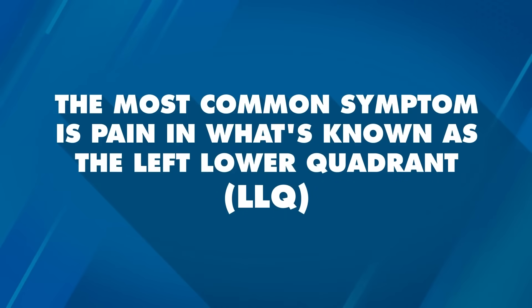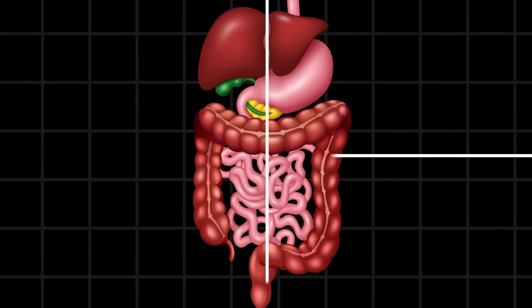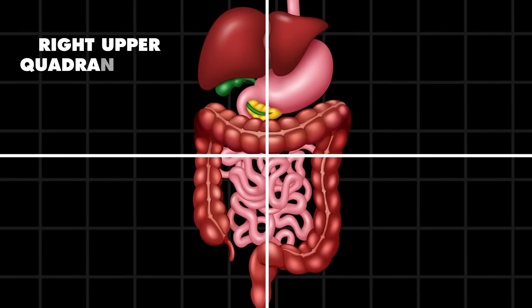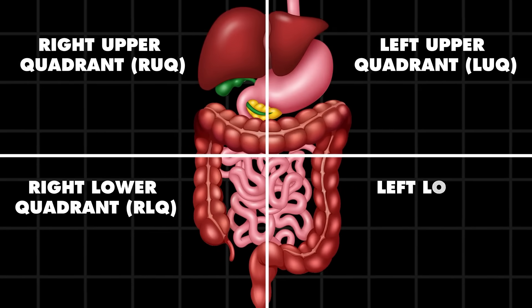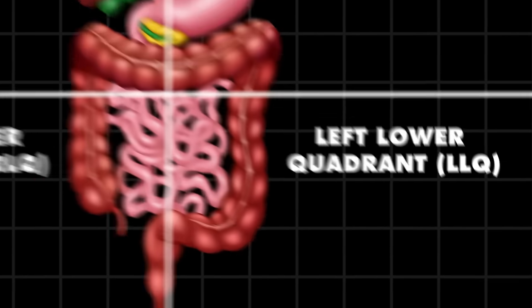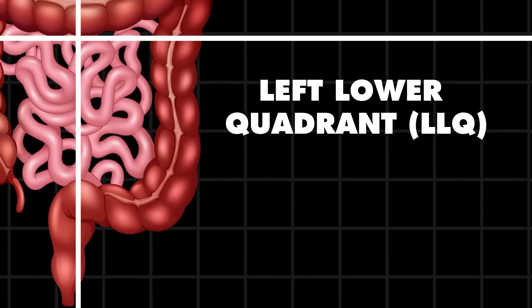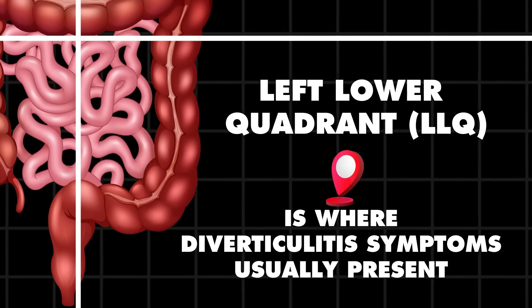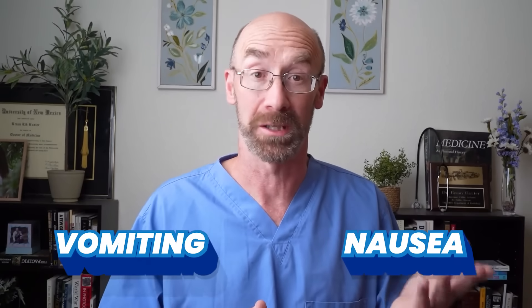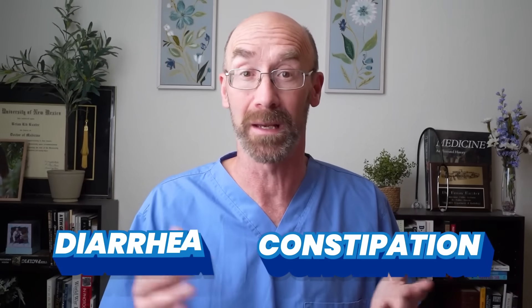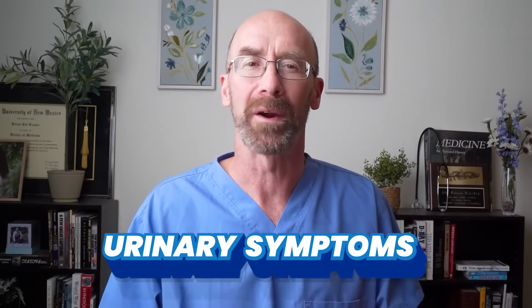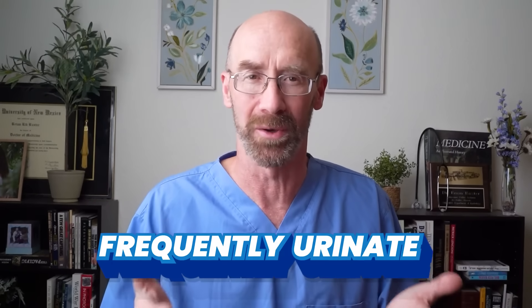The most common symptom is pain in the left lower quadrant. We divide the abdomen into four quadrants: right upper, left upper, right lower, and left lower. The sigmoid colon is localized in the left lower quadrant, so that's where diverticulitis symptoms usually present. Other symptoms can include nausea, vomiting, constipation, diarrhea, and even urinary symptoms — burning when you urinate or a frequent urge to urinate.